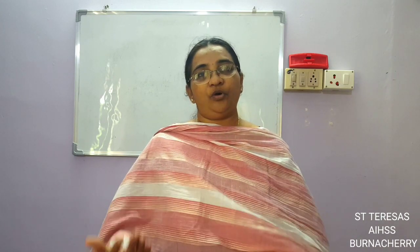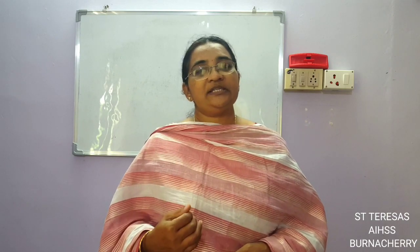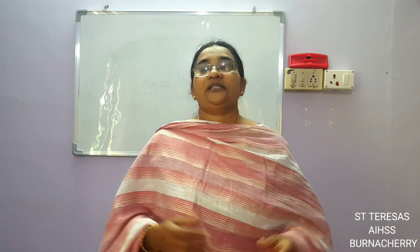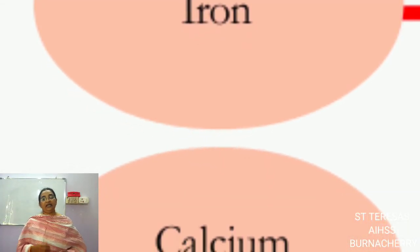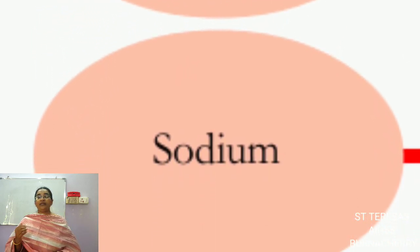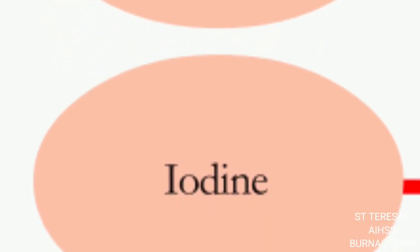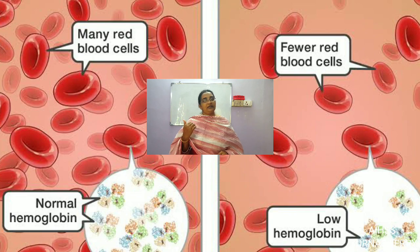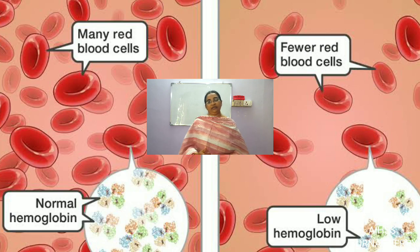Mineral is one of the nutrients needed for our body. We get many minerals from under the earth, from water, from the sea. All these minerals are essential for our body. Our body needs certain minerals like iron, calcium, phosphorus, sodium, and iodine. When there is less iron in our body, we have less hemoglobin in our blood and then we become anemic.